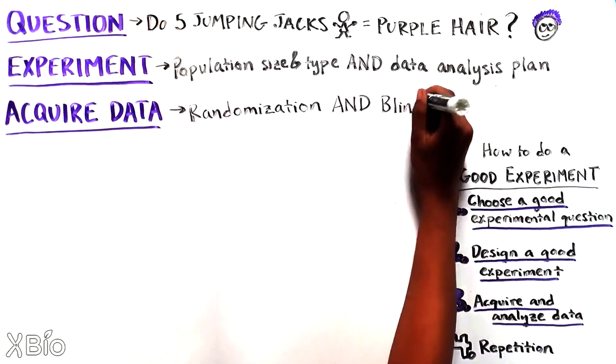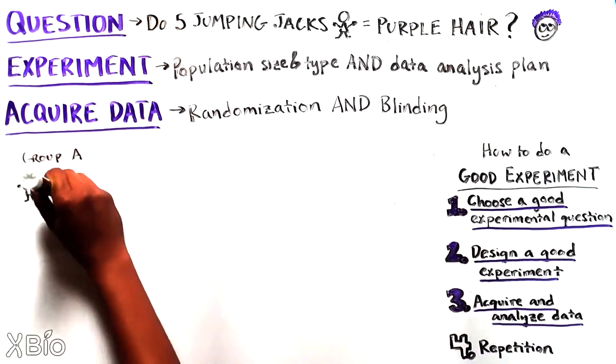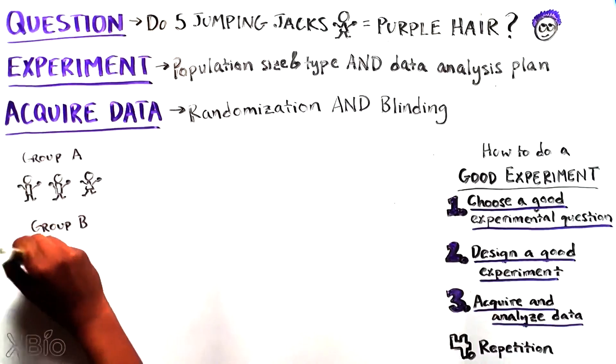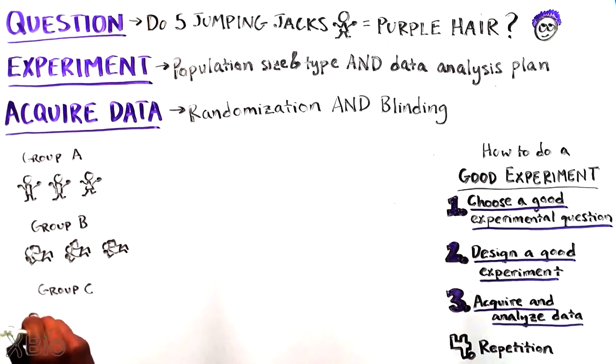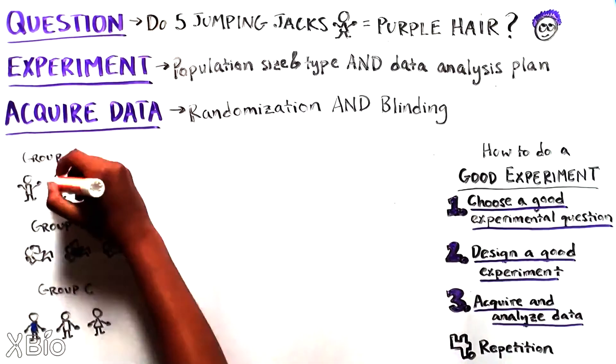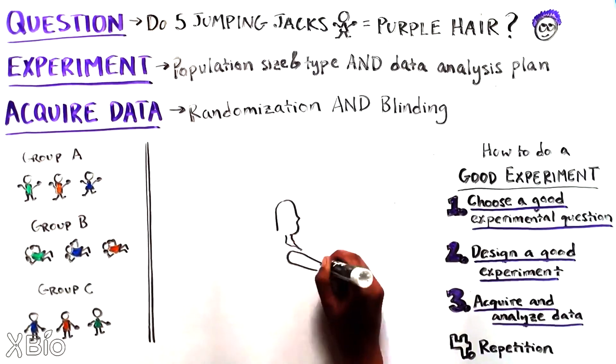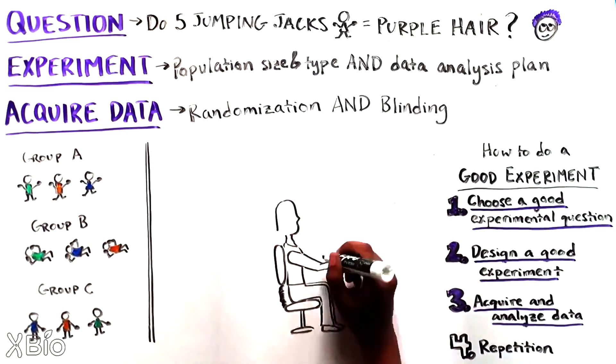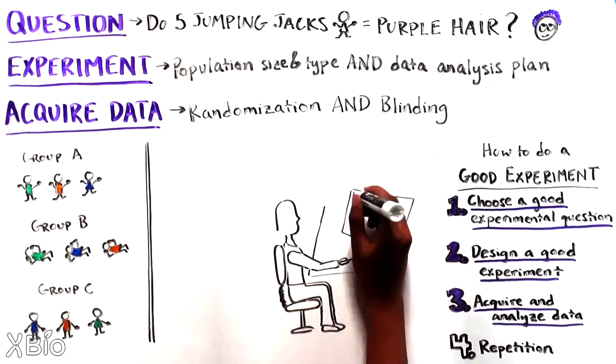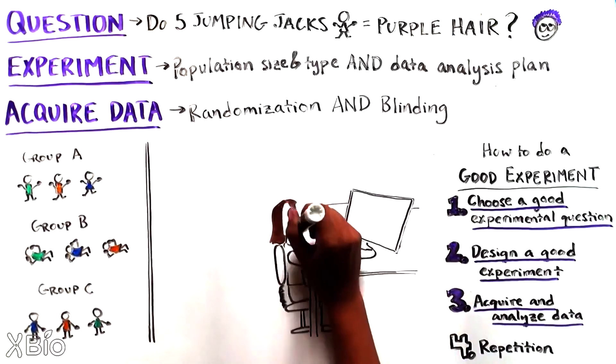The second is blinding. This means that both the participants and the experimenters don't know who is in which group where possible. In this case, it's pretty tricky as you can't hide from the participants which exercise they are doing. But once the data has been acquired, it can be labeled in a way that means the groups are hidden to those doing analysis.